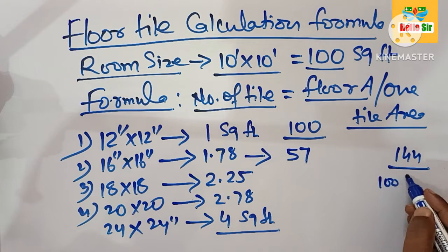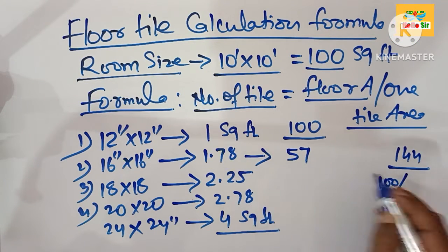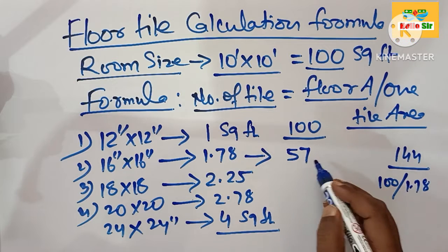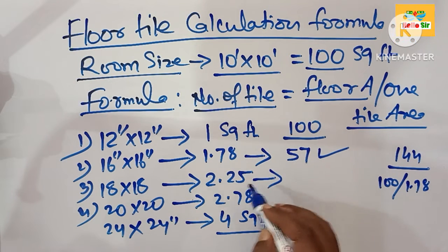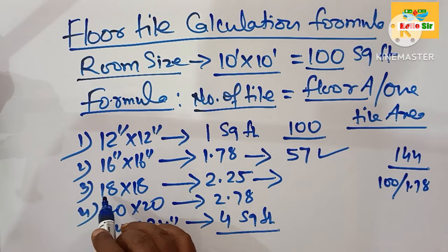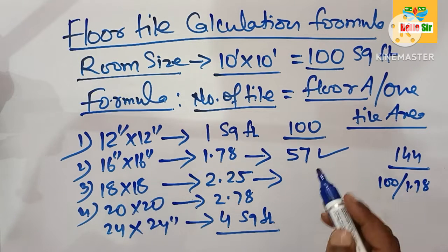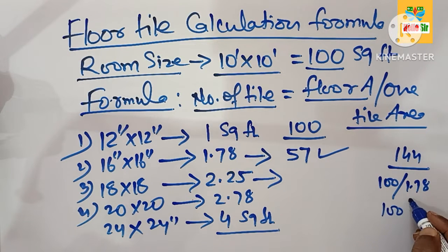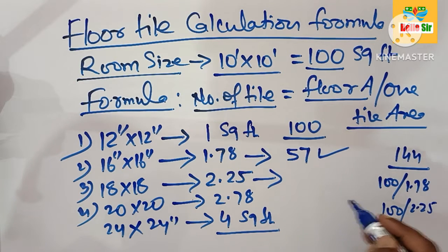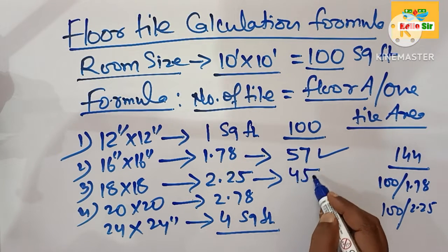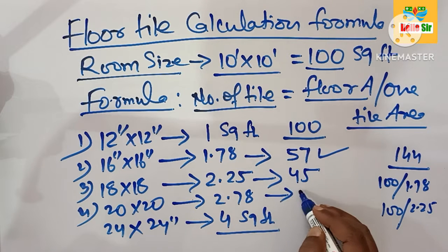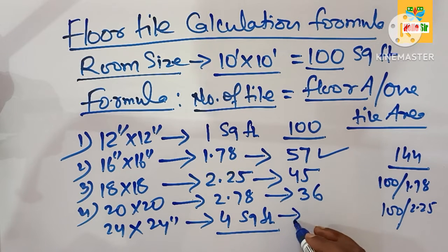How does 57 come? 100 divided by 1.78 equals 57 tiles. For 18-inch tiles: 100 divided by 2.25 gives about 45 tiles. For 20-inch tiles, this comes to about 36 tiles. And for 24-inch tiles, this comes to about 25 tiles.